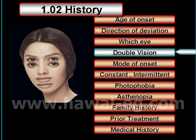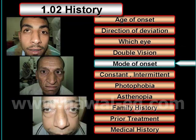Then you ask about the presence of double vision and in which gaze this double vision appears. Then you ask about the mode of onset — is it sudden or gradual? Is there any precipitating factor?